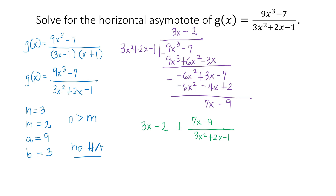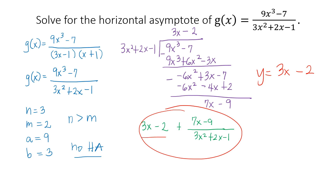We disregard the remainder 7x − 9. Therefore, the line y = 3x − 2 from the quotient is the oblique asymptote of g(x). The graph of the given function will approach y = 3x − 2 but will never intersect it, since it is the oblique asymptote.